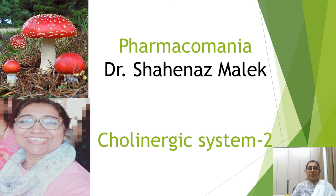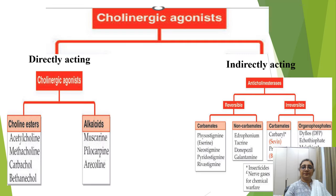Today's topic of discussion is the pharmacology of the cholinergic system — cholinergic system 2. Hi, Dr. Shahnaz Malek here, and welcome to Pharmacomania. Here is the classification of cholinergic agonists, also called cholinomimetic or parasympathomimetic drugs.